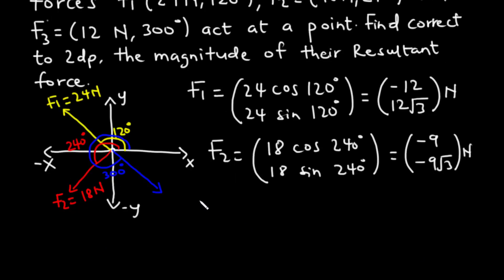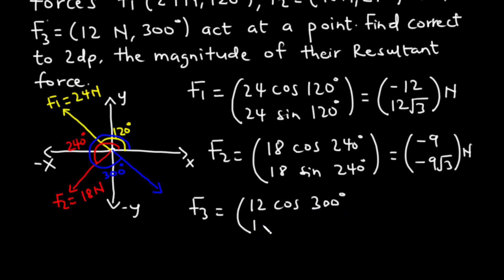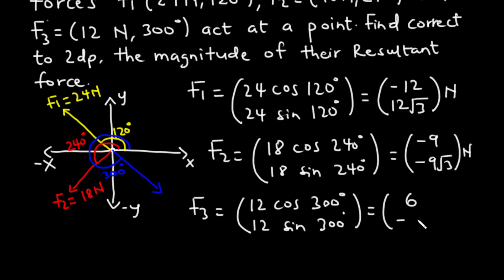For F3, we have 12 cos 300 degrees for the x-component and 12 sin 300 degrees for the y-component. 12 cos 300 is 6 and 12 sin 300 is negative 6 root 3.